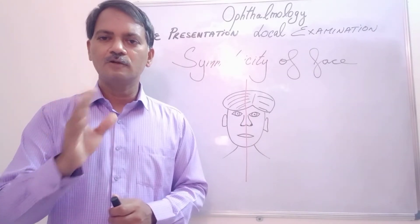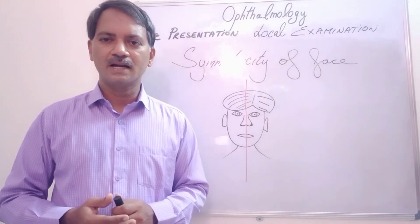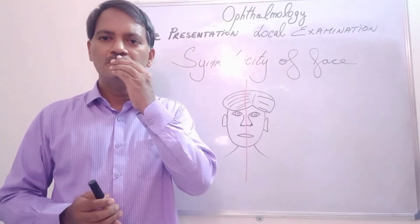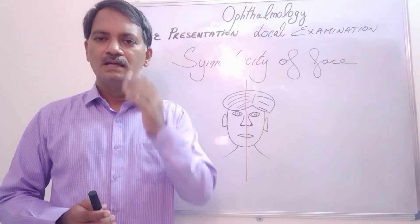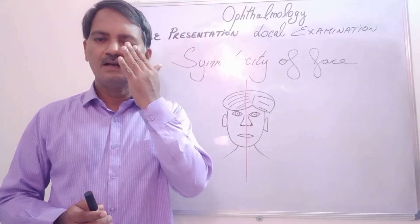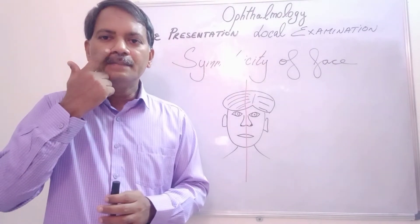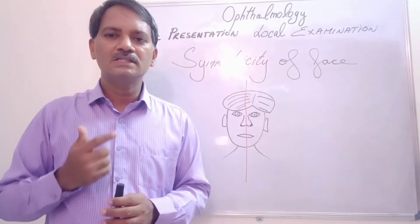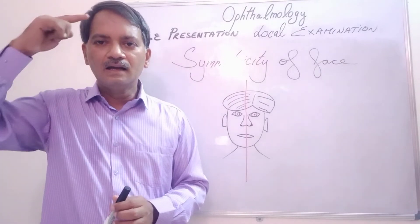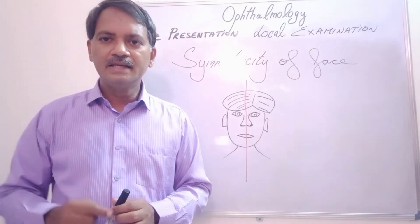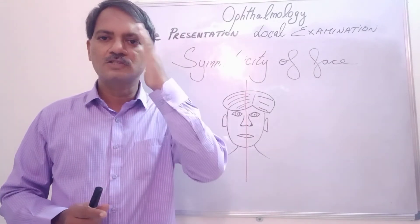In facial nerve paralysis, suppose the right side facial nerve is paralyzed. The mouth will be pulled towards the left side. When the patient closes both eyes, he can close the left eye well, but will not be able to close the right eye. The labial crease will be absent on the side of facial nerve paralysis and very prominent on the other side. Similarly, the forehead crease will not be present on the side of paralysis but will be obvious on the other side.